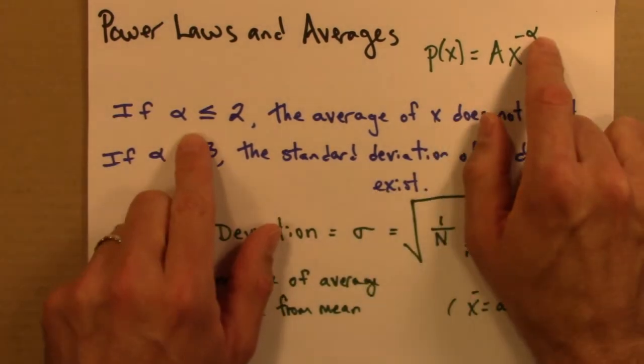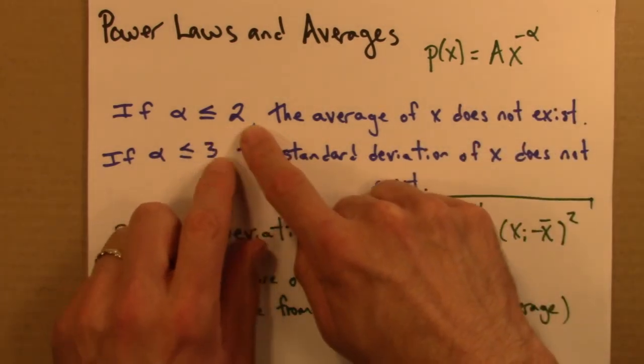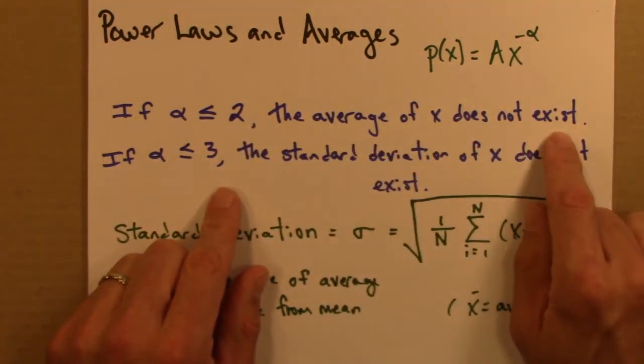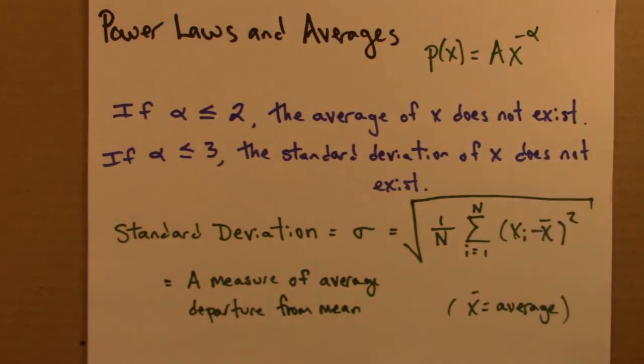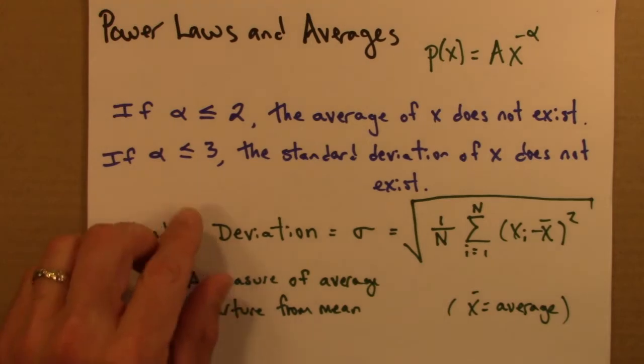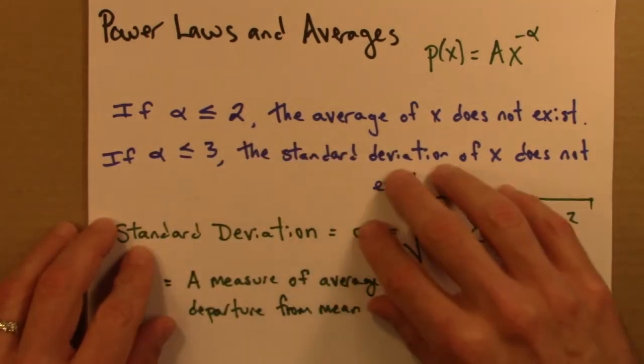So here's the result for power laws. So if alpha is less than or equal to 2, then the average does not exist. Just like we saw for the St. Petersburg game. So let me show you an example of that, and then I'll talk about this stuff down here.